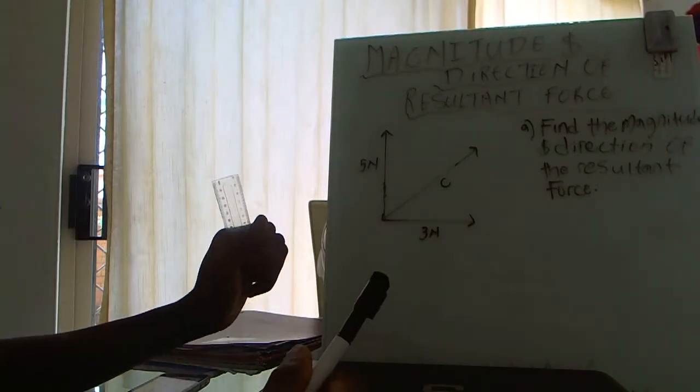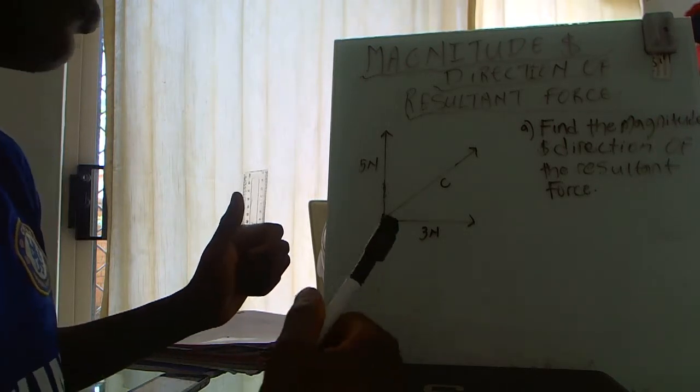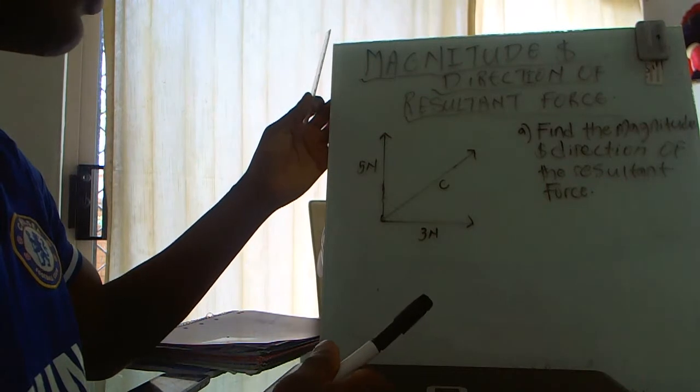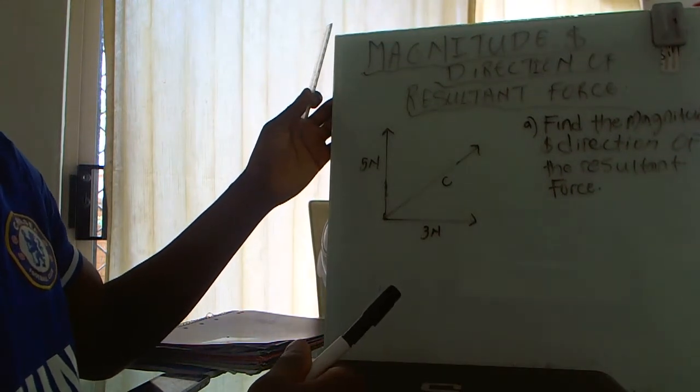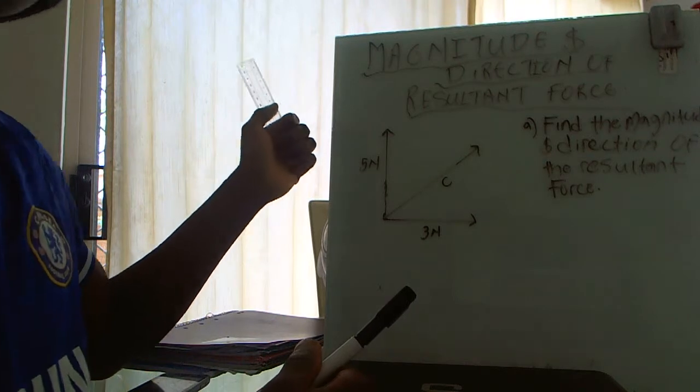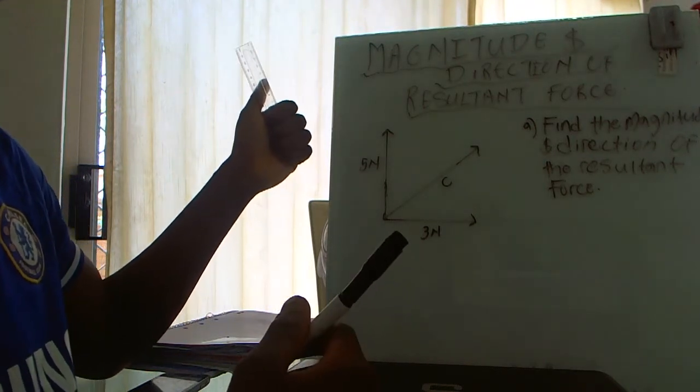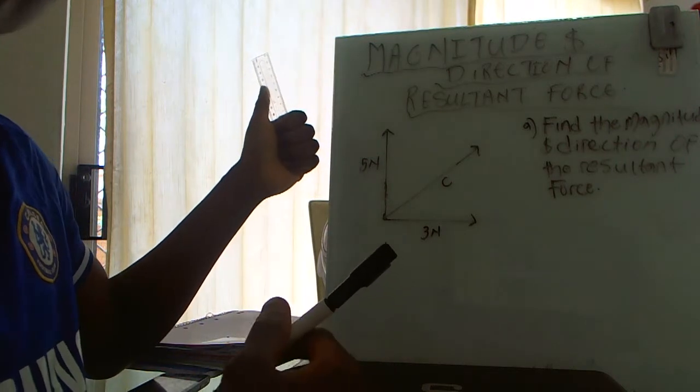Good day everybody, my name is Cornelius Azalibe and today we'll be looking at how to find the magnitude and direction of resultant forces. The magnitude simply means the length, like if we're talking in terms of distance, it's how much is put into this.